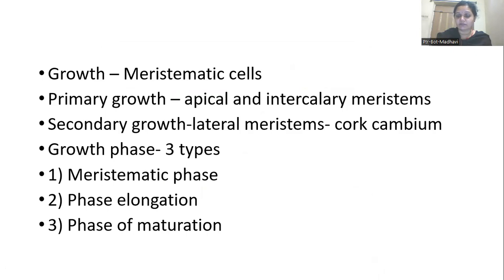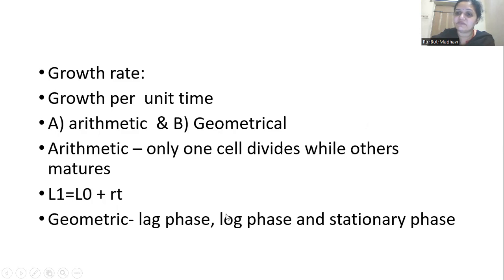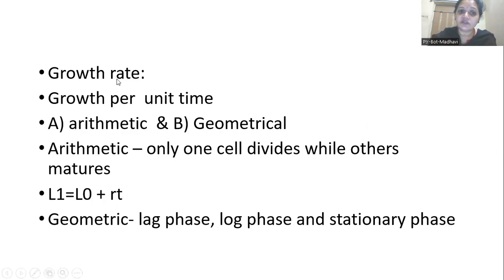In the plant body, the common meristematic tissues in root and stem are the apical meristems. Intercalary meristems are present only in the stem because nodes and internodes are only found there. The growth phase can be divided into three types: meristematic phase, elongation phase, and maturation phase. The meristematic phase is when meristematic cells are produced in the plant body, showing specific growth at specific time intervals.